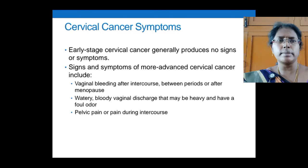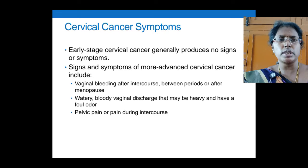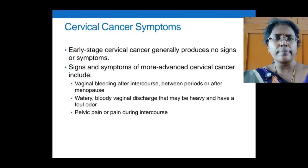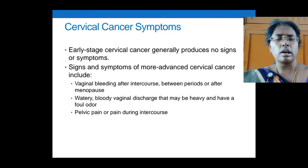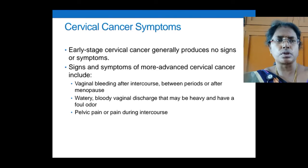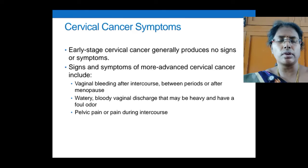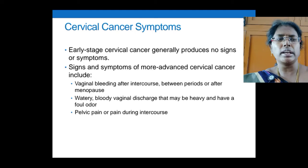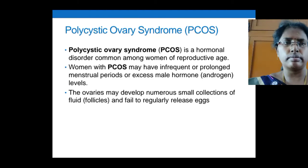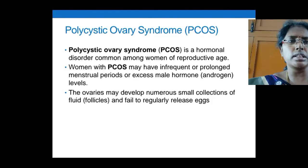The most common signs of cervical cancer are that in the early stages it generally does not produce any signs or symptoms. Only at the advanced or later stages do symptoms appear. These include vaginal bleeding after intercourse, between periods, or after menopause; watery or bloody vaginal discharge that can be heavy and have a foul odor; and pelvic pain or pain during intercourse.